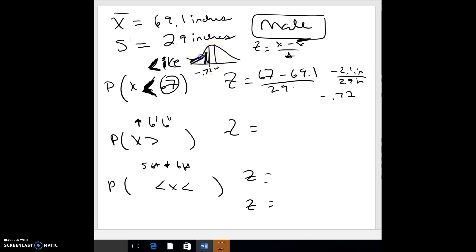See how I can tell it's less than 50 percent? It has to be because negative's over here and it's going to the left. If you look at the chart, make sure you're on the negative side and look at negative 0.72. So negative 0.7 and then the 0.02 is 23.58.